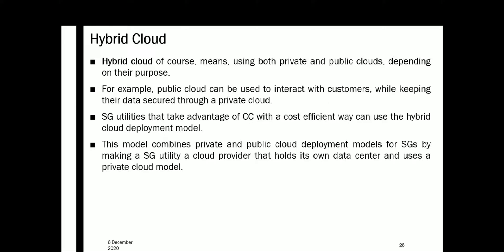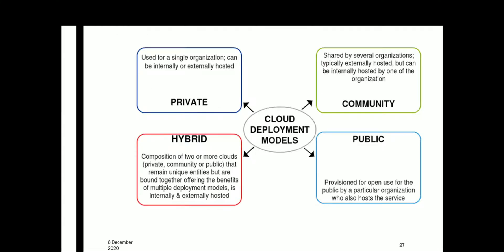Smart grid utilities, when taking advantage of cloud computing in a cost-efficient way, should use hybrid cloud to tap the maximum advantage of both private and public cloud. In summary: private cloud is used for a single organization and can be internally or externally hosted; public cloud is provisioned for open use by the public; hybrid cloud is a composition of two or more clouds; and community cloud is shared by several organizations, typically externally hosted but can be internally hosted by one of them.